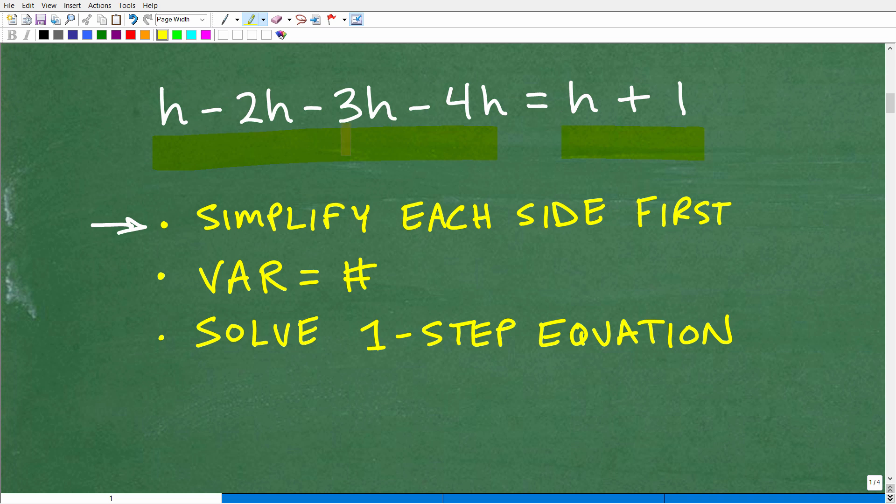Now, once you've done that, you need to be thinking in terms of getting all the variable terms to the left and all the numbers to the right. So we'll talk about what that looks like in a second. But basically, if there's variables on the right-hand side, we've got to scoot them over to the left-hand side. If there's numbers on the left-hand side, we've got to get those over to the right-hand side.